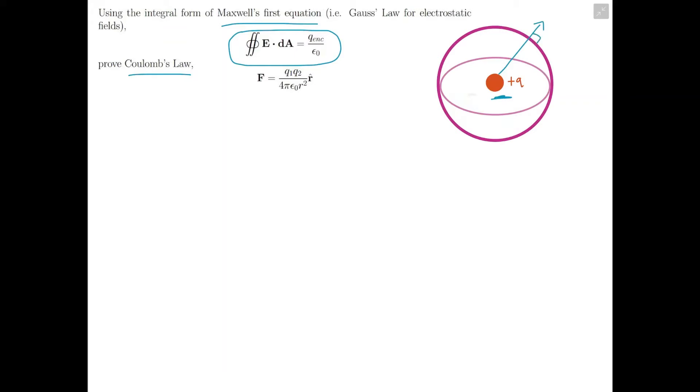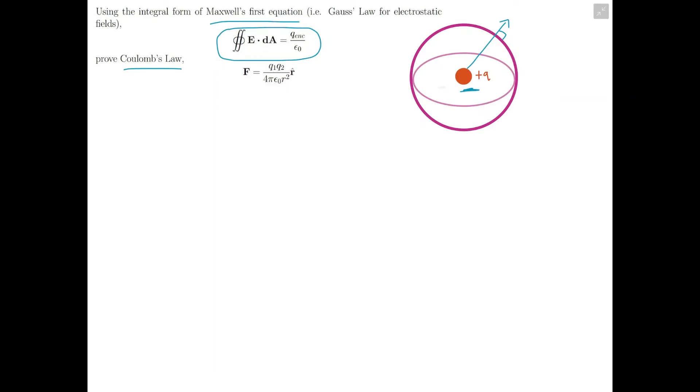So let's chop up the spherical surface into many tiny pieces that are almost a square. Let's say that each piece has area dA, so we can represent each piece using a vector dA, where the length of the vector is equal to the area it represents, and the direction of the vector is perpendicular to the area it represents.